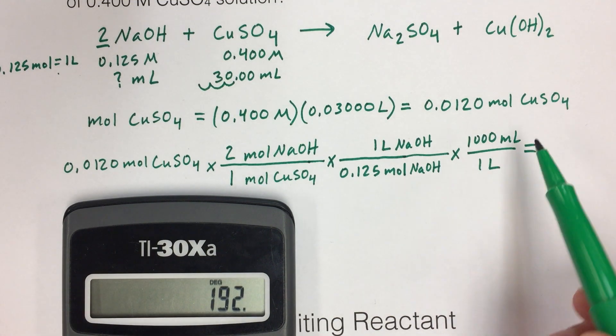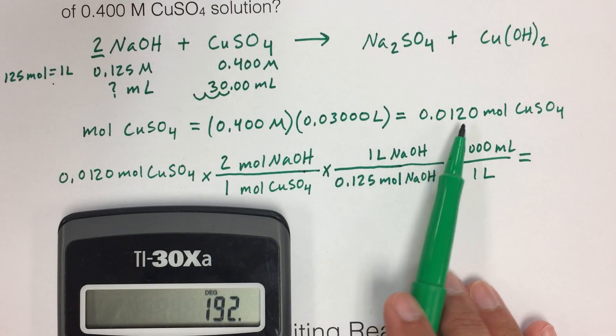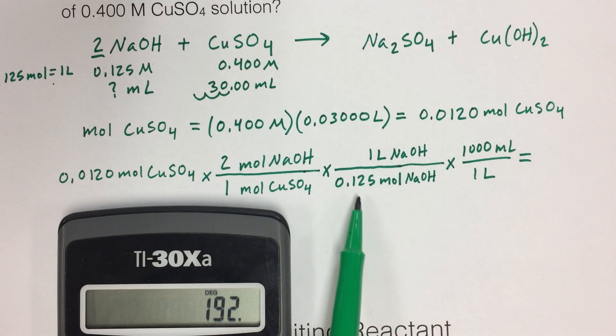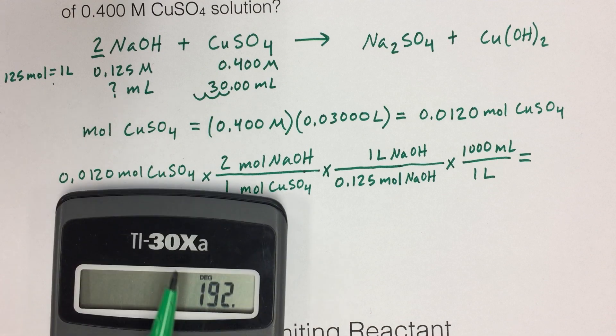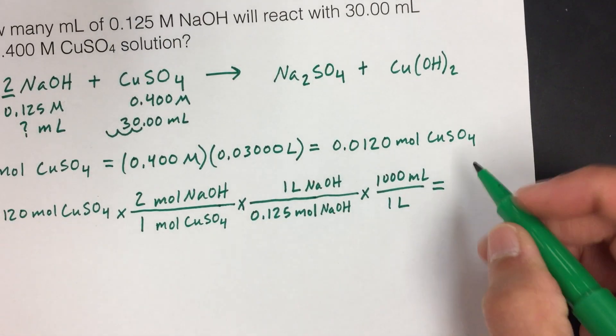Times 2 divided by 0.125 times 1,000 equals 192 milliliters. But let's think about our sig figs. We started with this number, which had three sig figs. We used this number, which also had three sig figs. So we can have three sig figs. So actually 192 is going to be our answer here.